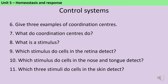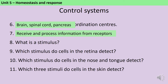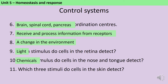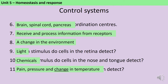The brain, spinal cord and pancreas are all examples of coordination centres — they receive information from the receptors and then process it. A stimulus is a change in the environment. The rods and cones in the retina detect light, the nose and tongue detect chemicals, and the receptors in your skin detect pain, pressure and change in temperature. Your skin can't actually tell whether it's hot or cold but what it can tell is whether the temperature is increasing or decreasing.